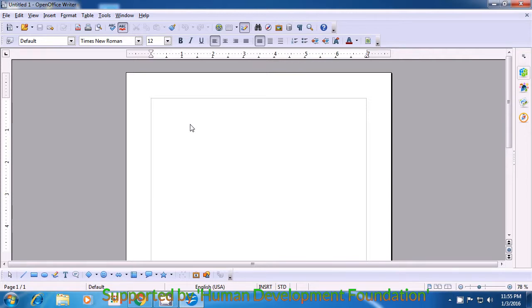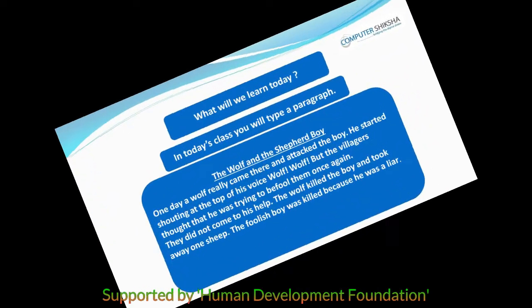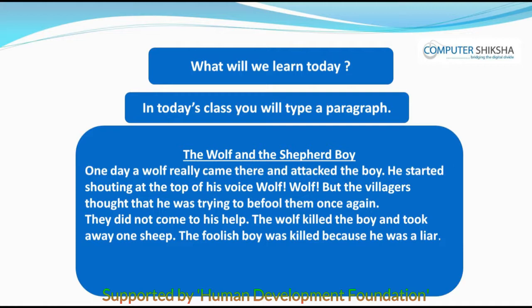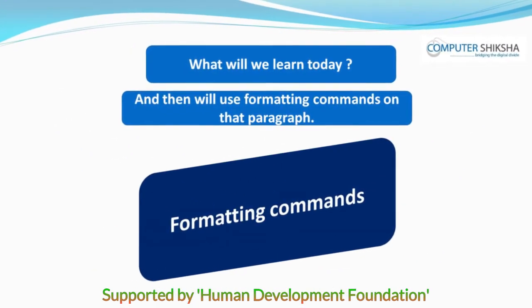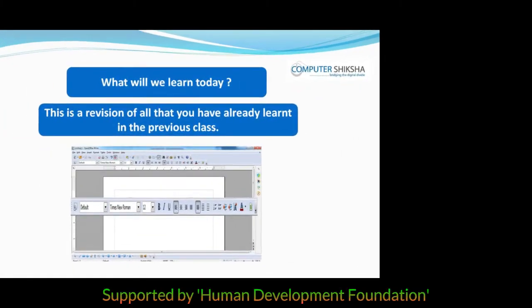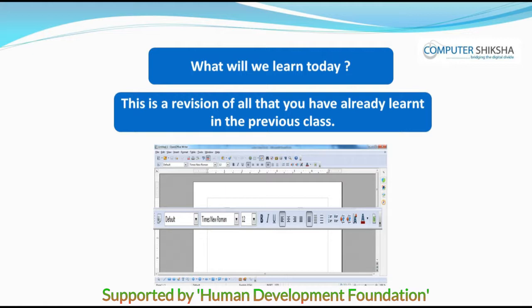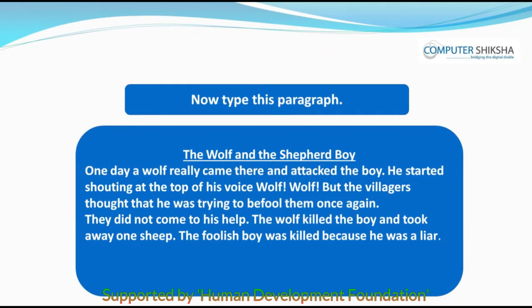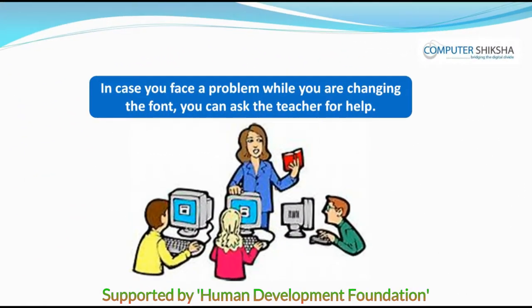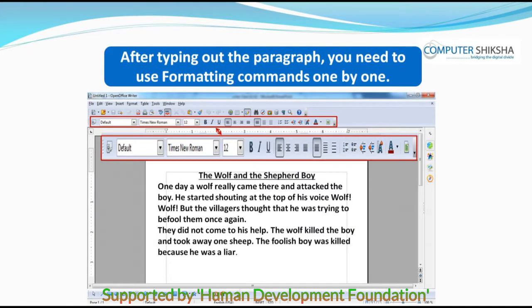Have you all been able to open the writer file? If not, then you should watch the video again. In today's class, you will type a paragraph and then use formatting commands on that paragraph. This is a revision of all that you have already learned in the previous class. Look at the paragraph given in front of you and start typing it on your writer page. If you face any problem, you should ask for help. After typing out the paragraph, you need to use formatting commands one by one.